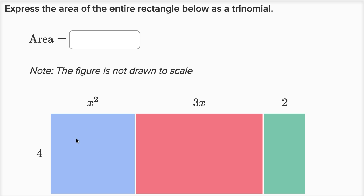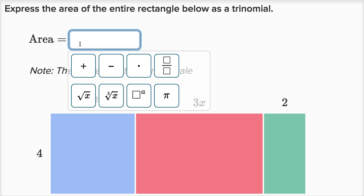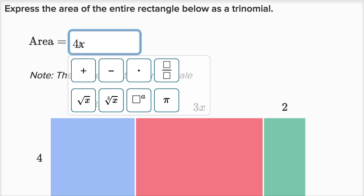What's the area of this blue rectangle? It looks like a square, but let's just call it a rectangle—all squares are rectangles, so that's safe. Well, it's gonna be the height times the width. So the area here is going to be the height, which is four, times the width, which is x squared.